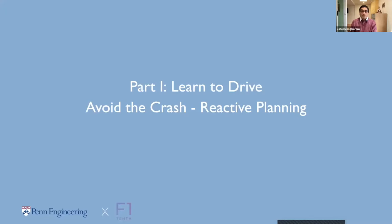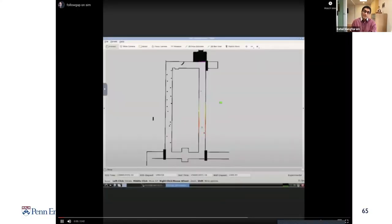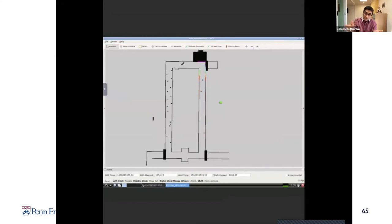All right. So, let's look at how do we avoid crashing and basically running these reactive planning algorithms. So, essentially, we want to learn how to drive this car in a track, first of all, and follow this track along.